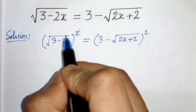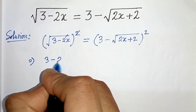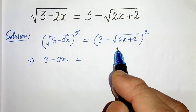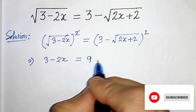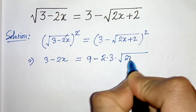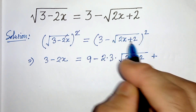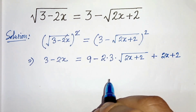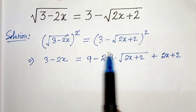From the left side, the square and the square root cancel, giving 3 - 2x. On the right side we expand using (a - b)² = a² - 2ab + b², so a² is 3² = 9, minus 2ab is 2 × 3 × √(2x+2), plus b² is √(2x+2) whole squared, which gives 2x + 2 since the root and square cancel.